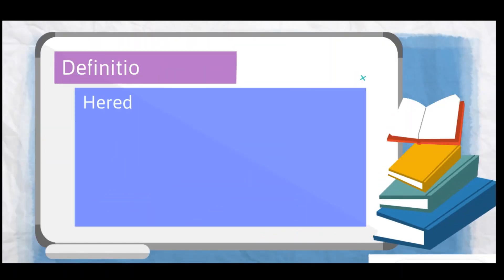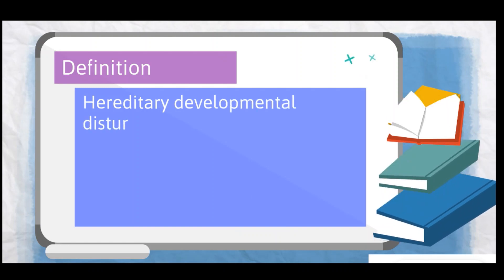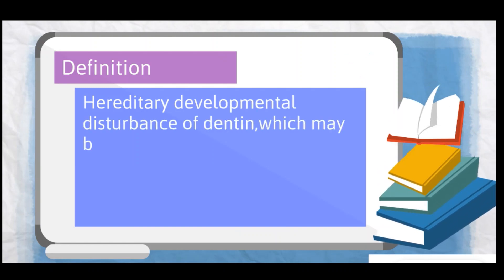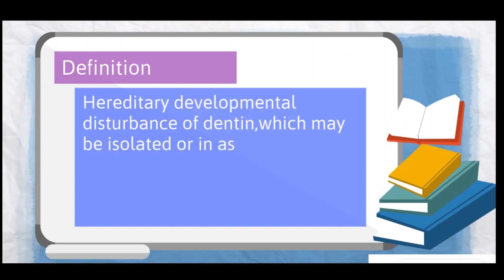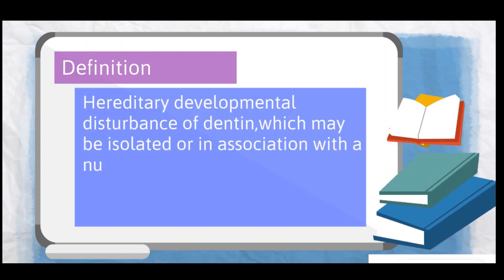Moving on to the definition: dentinogenesis imperfecta is a hereditary developmental disturbance of dentine which may be isolated or in association with a number of syndromes.